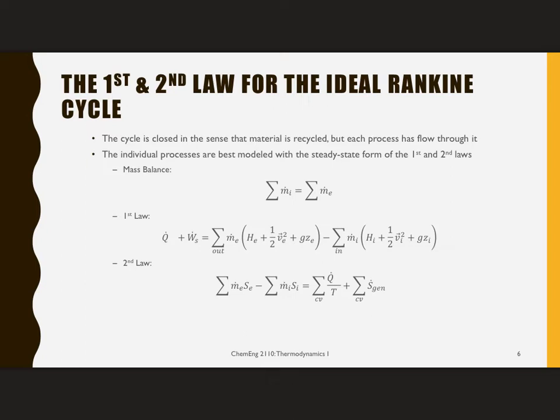The first law analysis for any piece of equipment in this system says that the heat transfer plus shaft work will equal the sum of the total energy coming out minus that coming in. Now, total energy in this case will be enthalpy, right? It's a flowing system, enthalpy, plus the kinetic energy and the potential energy. And my second law, again, no accumulation, so the flow of entropy, so m dot s out minus m dot s in, will equal the heat transfer divided by the temperature it occurs at plus the entropy generation for my entire system. Again, entropy generation is going to either be zero for an ideal reversible process, and it's going to be positive for any real process.